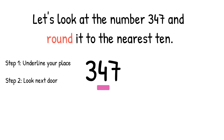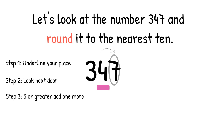Step 2: look next door. So we're going to put a little arrow from the tens column to the ones column and look at that digit — we're going to put a circle around it. Step 3: if it is 5 or greater, you add one more to the place that you are rounding. So since we are rounding to the nearest 10, the 4 tens would now become 5 tens.